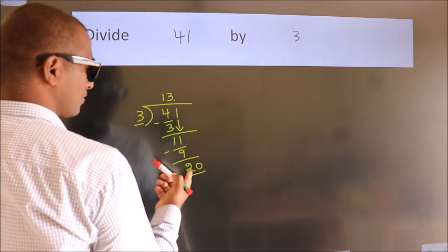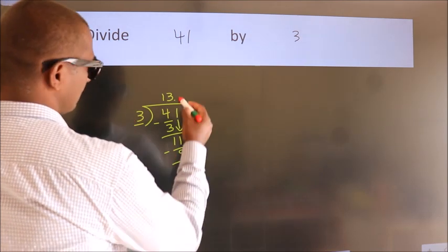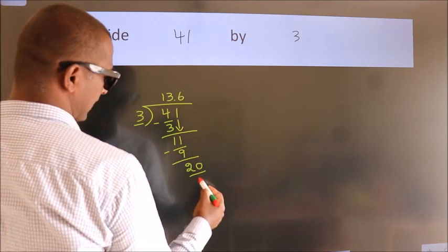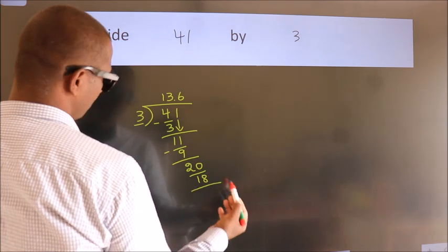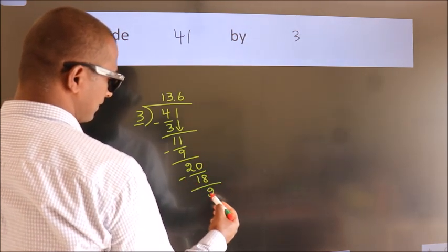A number close to 20 in the 3 table is 3 times 6 is 18. Now we subtract. We get 2.